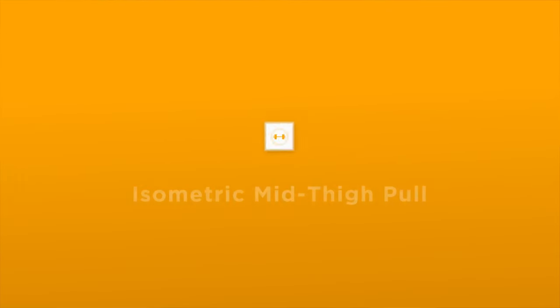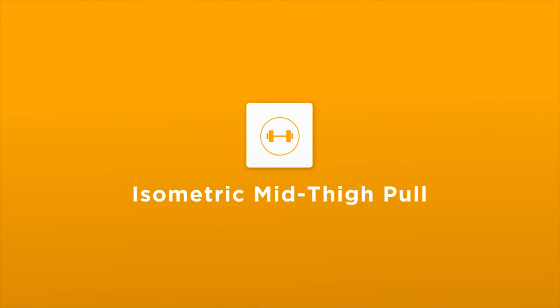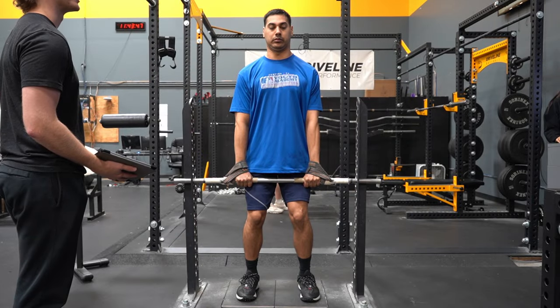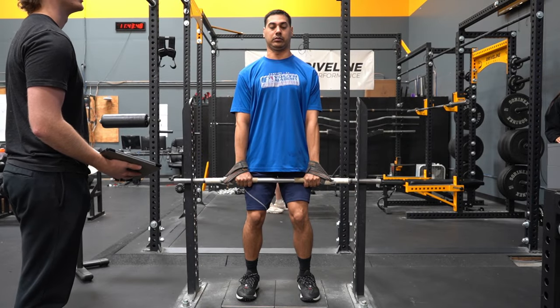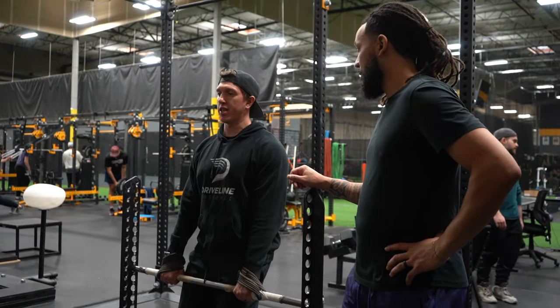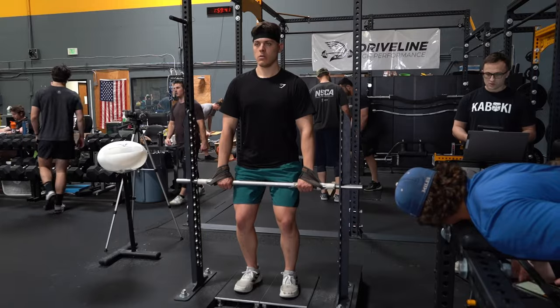Once the jump testing has been completed, we move on to the isometric mid-thigh pull. Different than traditional strength testing, the isometric mid-thigh pull allows us to determine reliably and safely an athlete's absolute strength.